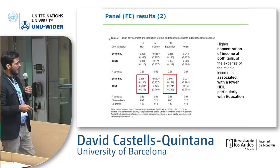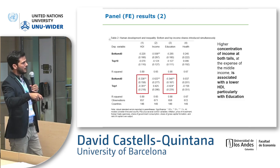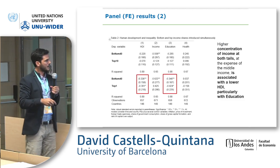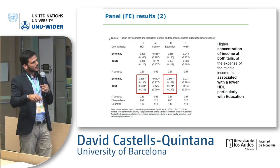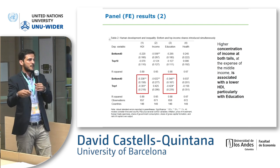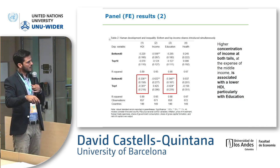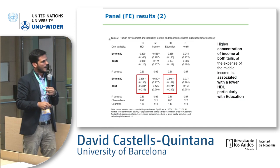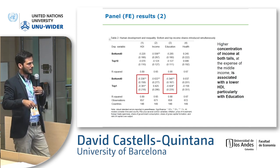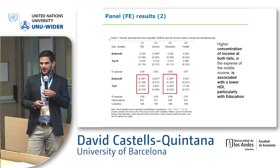The second set of results uses the bottom 40% and the top 10%, and we look at HDI, income, education, and health separately. What we find is that higher concentration of income at both tails — at the expense of the middle — is associated with a lower HDI. Concentration at the extremes seems to be what lowers human development. When we look at income, education, and health separately, what seems to be driving it is education — and this supports some early findings on educational outcomes. For health, we don't find much.